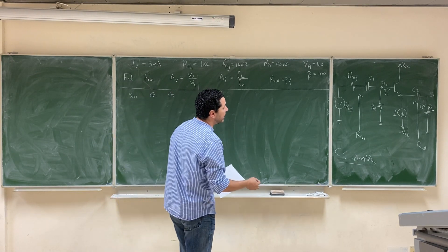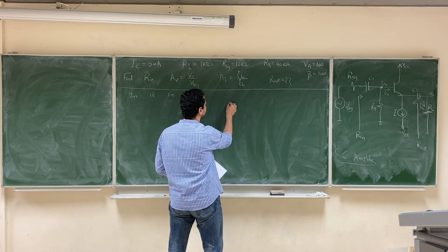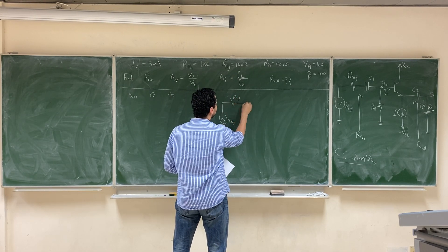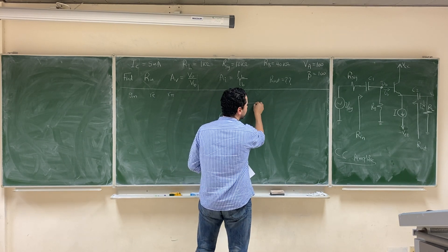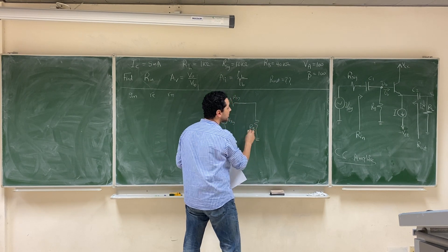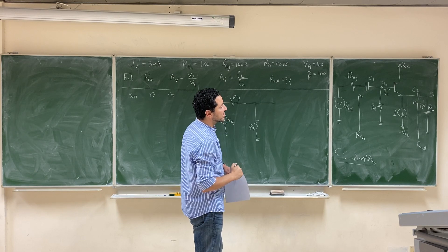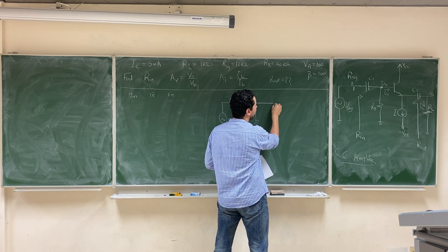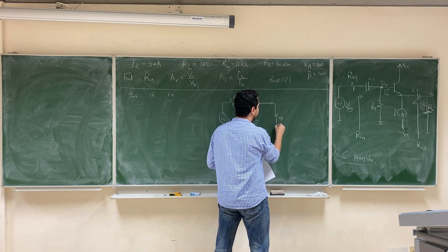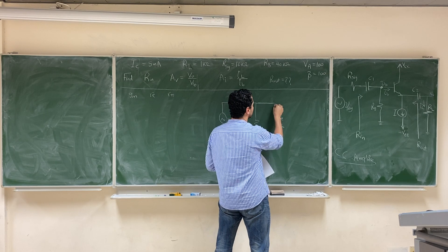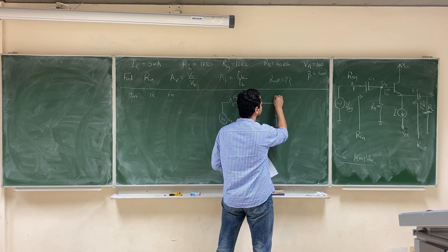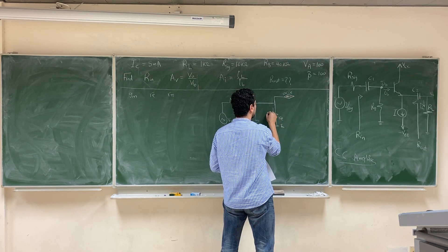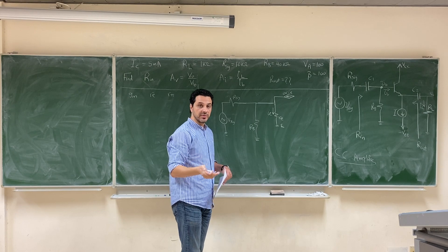So let's do the AC model. We start from V-signal, always starting from the input source, then R-signal. Then we have a capacitor as a short circuit, then a resistance RB towards ground, and then the transistor. We are going to replace the transistor with the T-model. In the T-model, the base will be connected by a wire, then the emitter has a resistance RE — this is the emitter of the transistor. The collector will be connected by a current source alpha-IE, where IE is the current in the emitter, or you can call it GM·VBE.